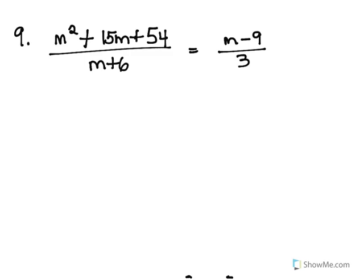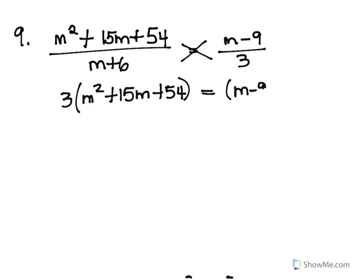So there's a lot of different ways that you could approach this particular problem, but what I decided to do was to cross-multiply first. So that means I'm going to do 3 times m squared plus 15m plus 54, set that equal to m minus 9 times m plus 6. Now what I'm going to do is I'm actually going to distribute this 3 inside the parentheses, and over here on the right-hand side, I'm actually going to apply my FOIL technique to try to figure out what all of this is equal to.